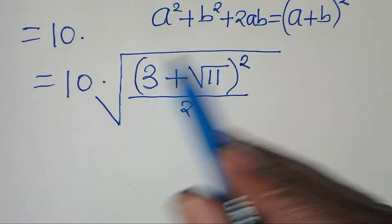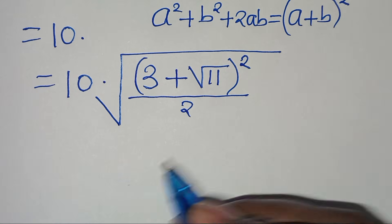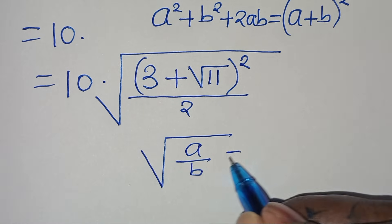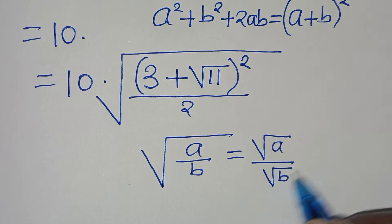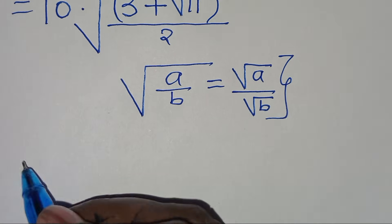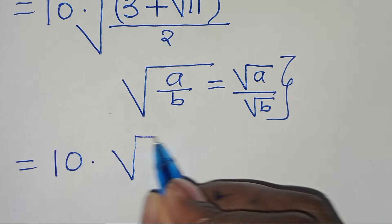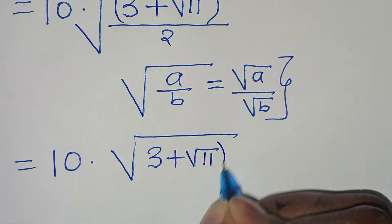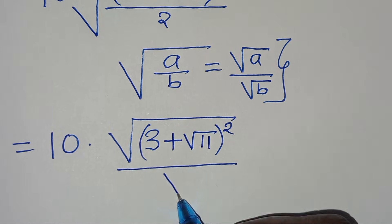We have square root of (3 plus square root of 11) squared, divided by 2. This is in the form of square root of a over b, which can be expressed as square root of a divided by square root of b. Applying this property, we get 10 multiplied by square root of (3 plus square root of 11) squared, divided by square root of 2.